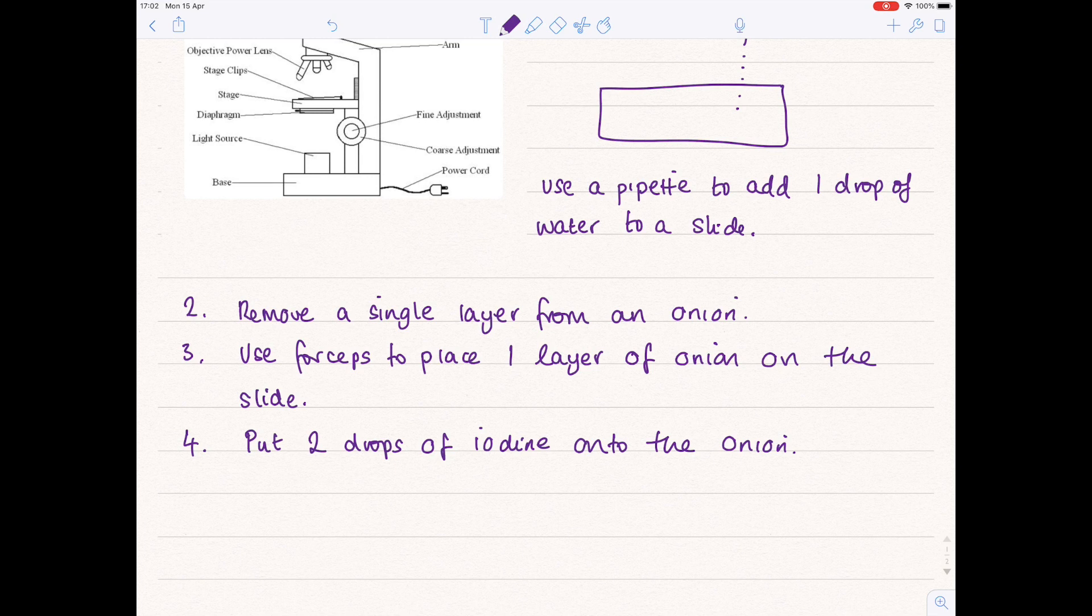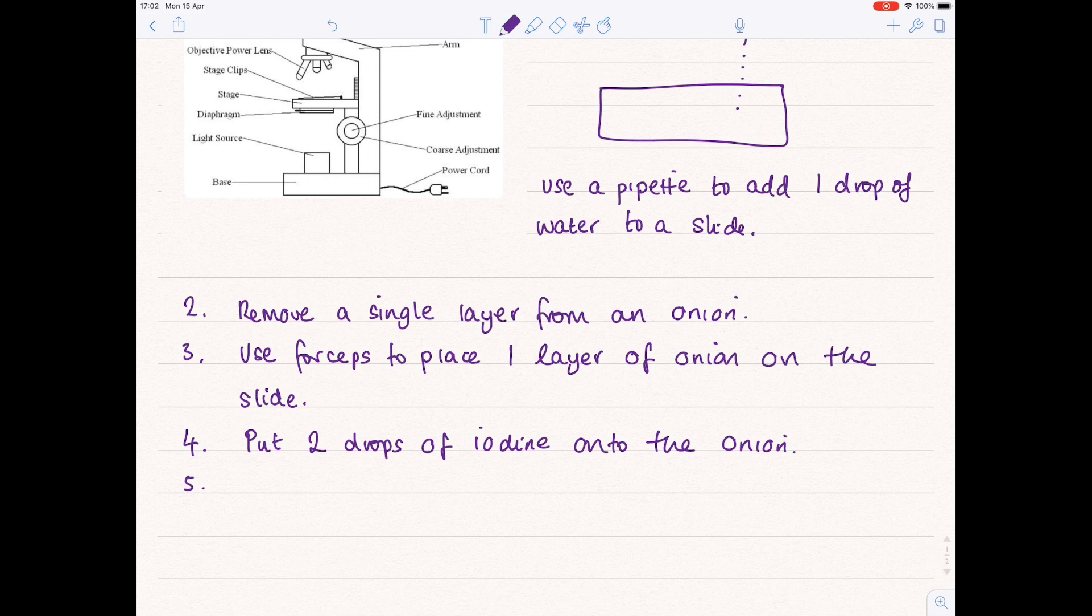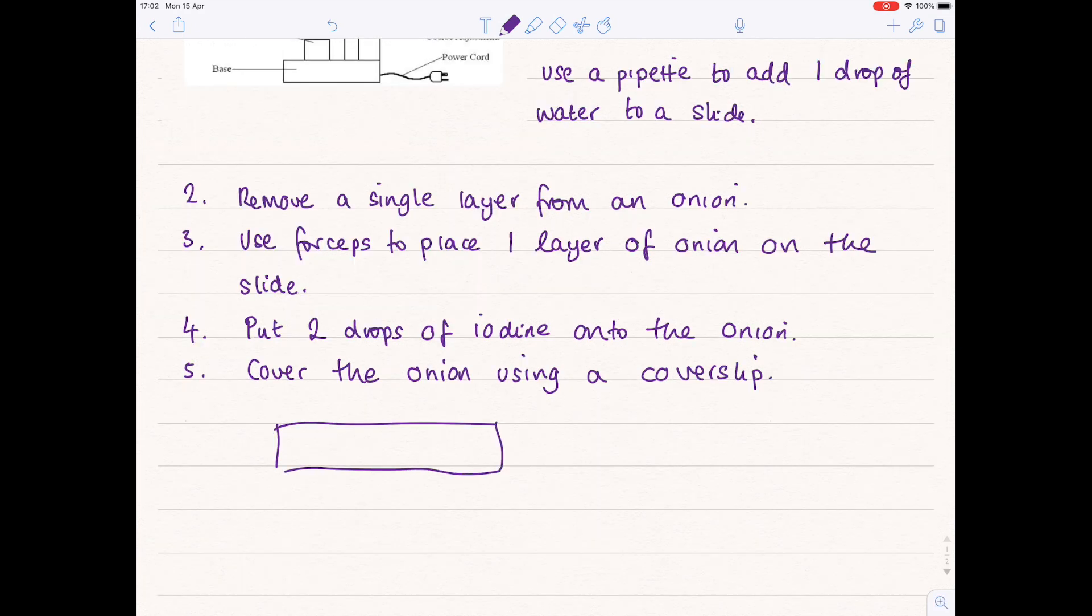In order to fix the onion in position, we're going to have to cover it with what's called a cover slip. This will look a little bit like this. So here's our slide. You'll have a tiny layer of onion, which is obviously in the water, and then you use a little square cover slip to seal it in place.